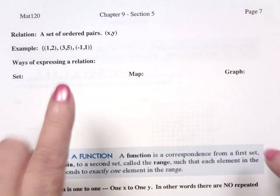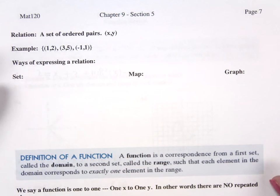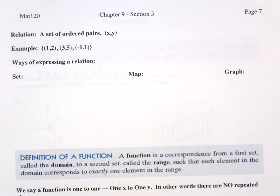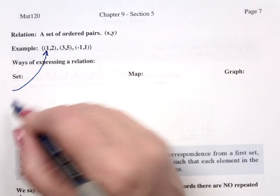Examples would be, and I put this in set notation, 1 comma 2, 3 comma 5, negative 1 comma 1. This is an example as a set.